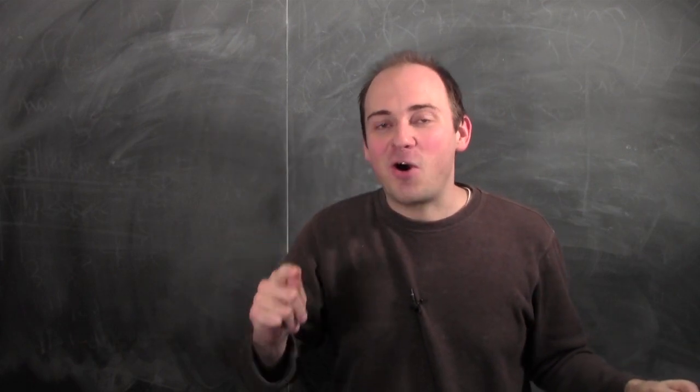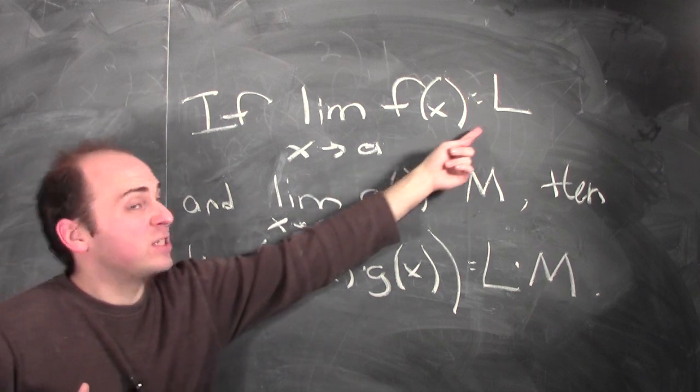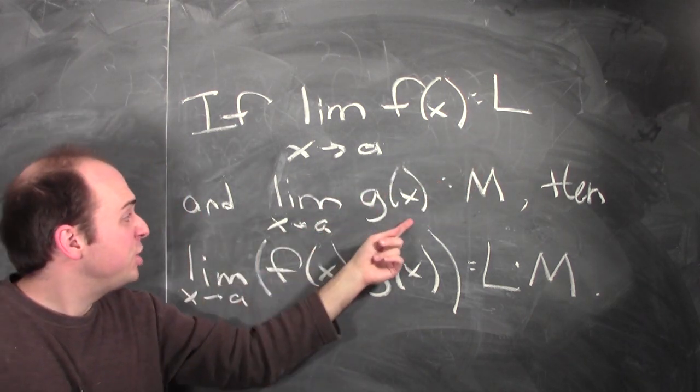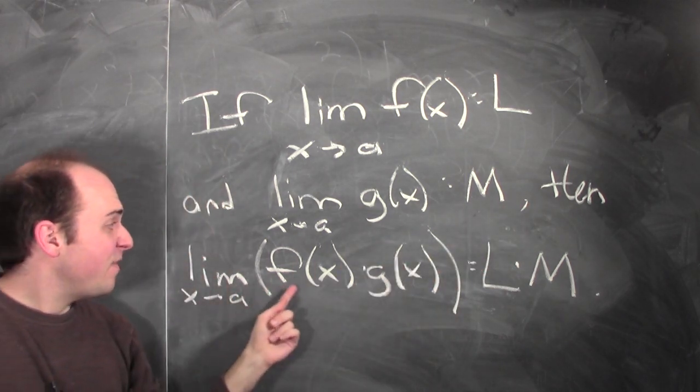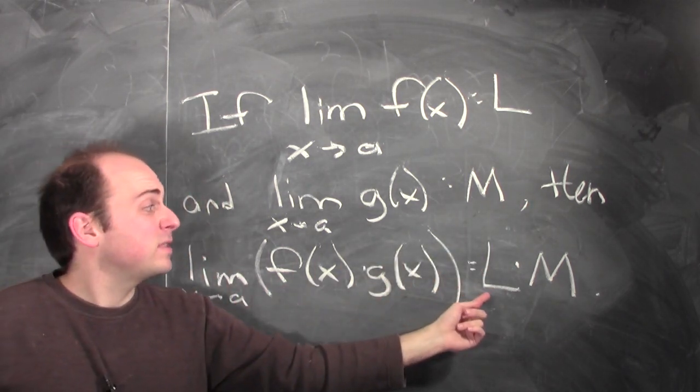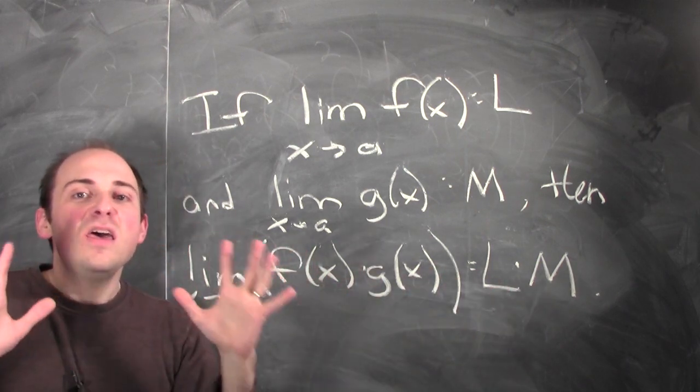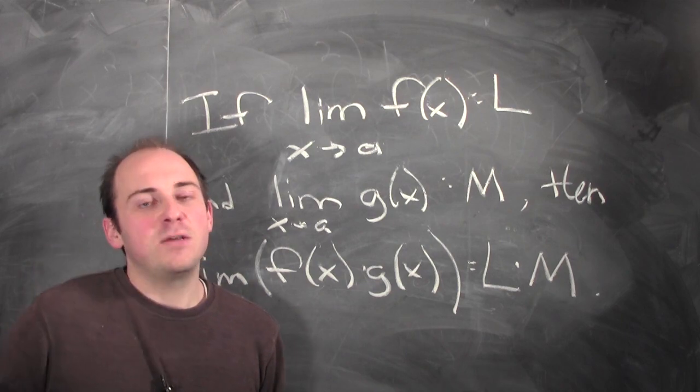There's a limit lesson hiding in all of this. If the limit of f(x) as x approaches a is L, and the limit of g(x) as x approaches a is M, then the limit of f(x) times g(x) as x approaches a equals L times M. In other words, the limit of the product is the product of the limits, provided those limits exist.